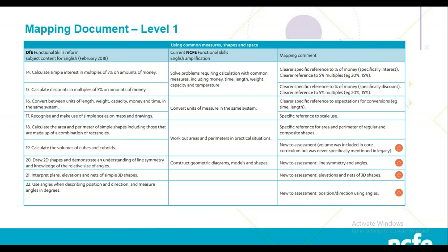Plans and elevations for 3D shapes are brand new — learners will need to know what a 3D shape looks like from a plan view, side view, and front view, and how to draw the net of a 3D shape. These assessments are online. The final new change in this section is using position and direction with angles, and measuring angles in degrees — so quite a few key changes in shape, space and measure, with four definite new areas not previously assessed.